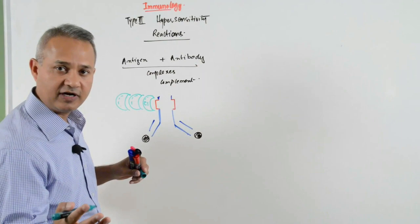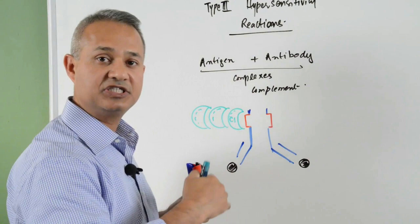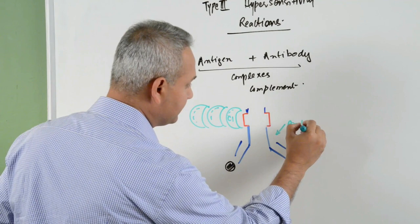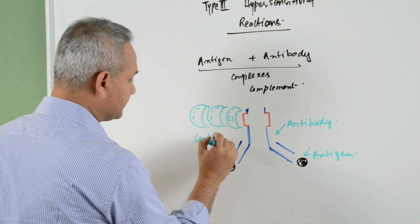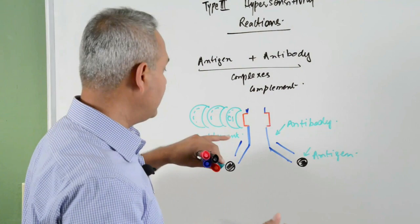C3a will be formed, C5a will be formed, membrane attack complexes will be formed, so complement activation, fixation and activation would occur. In this case you can see that we have an antibody, we have antigen, this complex with the complement is present freely in the body tissues.